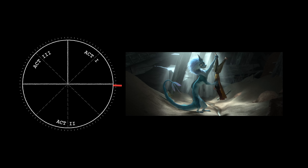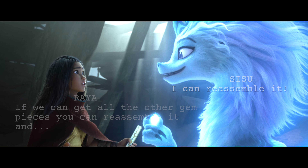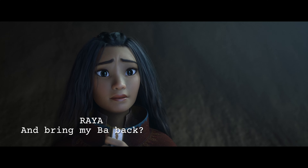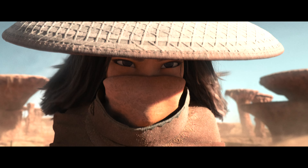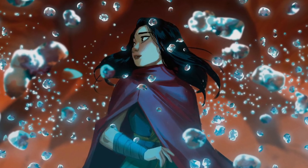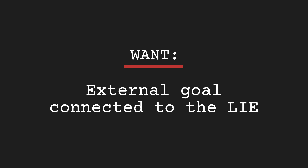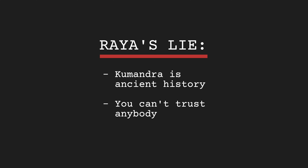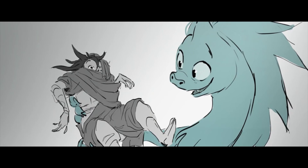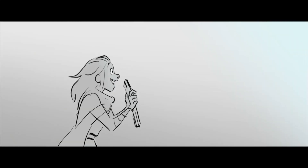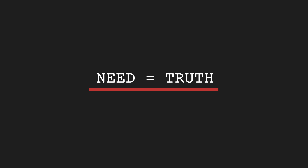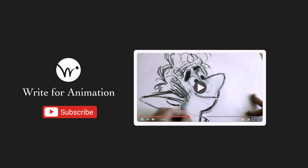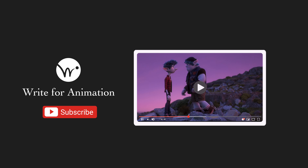We see the emergence of two goals. Raya says: 'If we can get all the other gem pieces, you can reassemble it and boom the Druun away!' Sisu asks: 'And bring my ba back?' Raya replies: 'And bring all of Kumandra back.' Raya's goal of bringing her dad back is what in screenwriting we call the want — the want is an external goal, it's what the character thinks is important and is connected to the lie. The need is what the character must realize in order to fulfill her life — in a word, the thing your character needs is the truth. If you'd like to dig deeper into want and need, check out the video in which I explain how it plays a major role in Pixar's Onward.